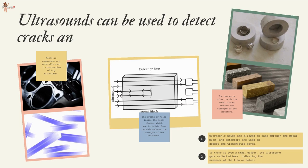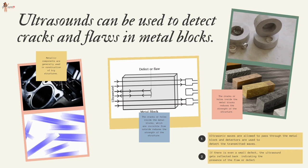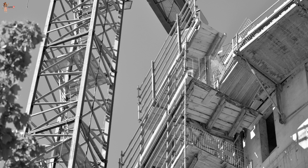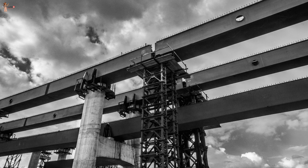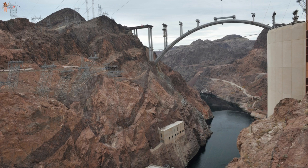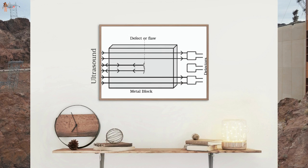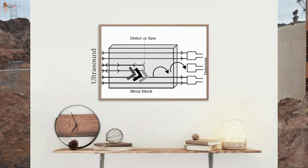Ultrasound can be used to detect cracks and flaws in metal blocks. Metallic components are used in construction of big structures like buildings, machines, bridges, and scientific equipment. Cracks or holes inside metal blocks, invisible from outside, reduce the strength of the structure. Ultrasonic waves are allowed to pass through the metal blocks, and detectors detect the transmitted waves. If there is even a small defect, the ultrasound gets deflected back, indicating the presence of the flaw. Ordinary sound of longer wavelengths cannot be used for such purposes as it will bend around the corners of the defective location and enter the detector.